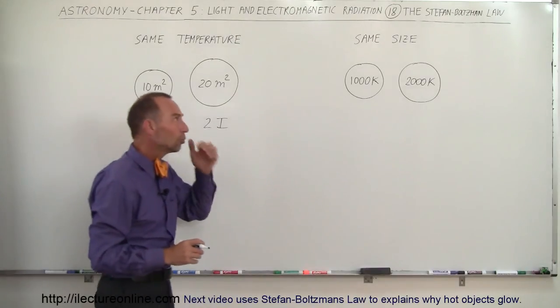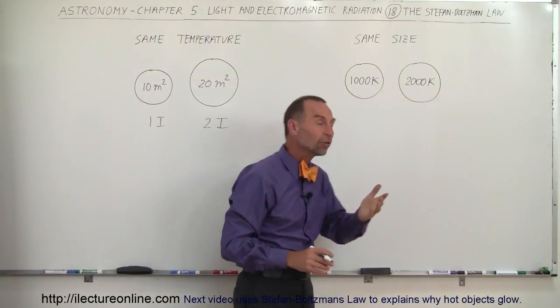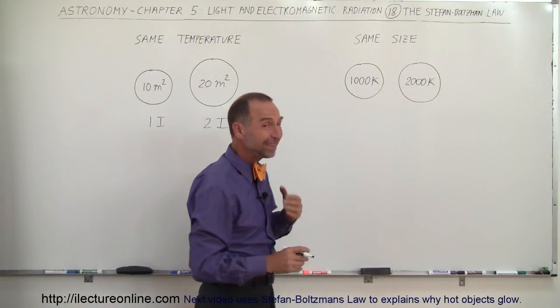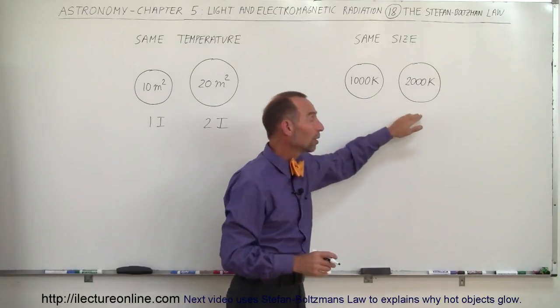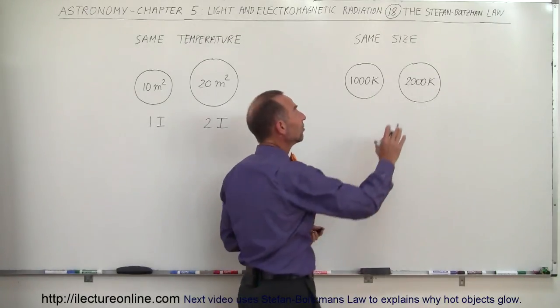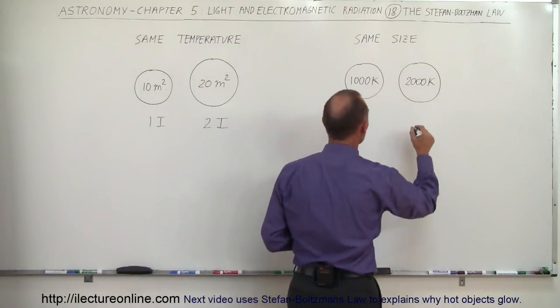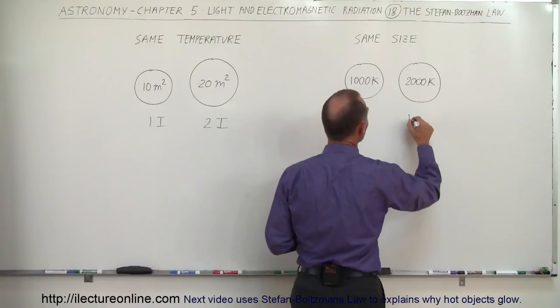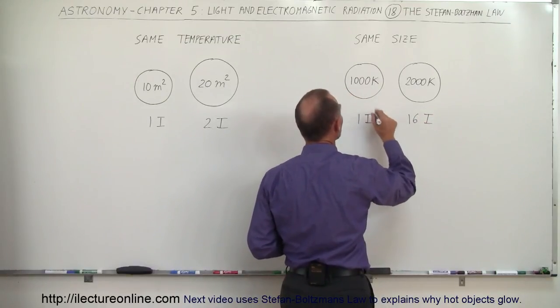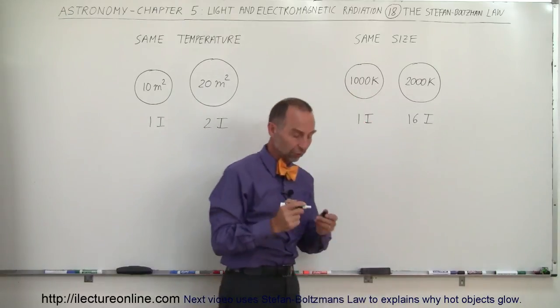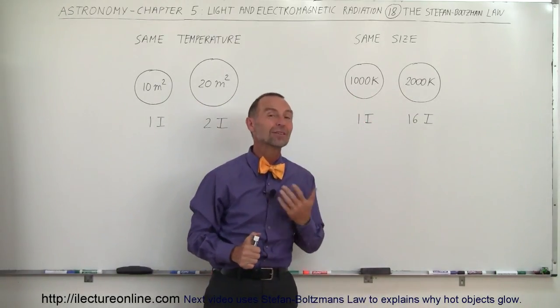They also looked at two objects at the same size but one was double the temperature of the other. They found something really surprising. If the temperature was twice as much and the objects were the same size, this object would give off 16 times as much radiation. When the temperature doubled, you would have 16 times the intensity.